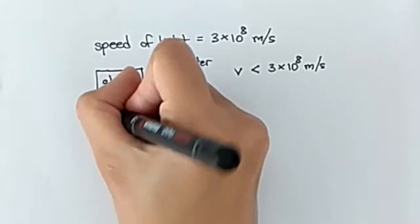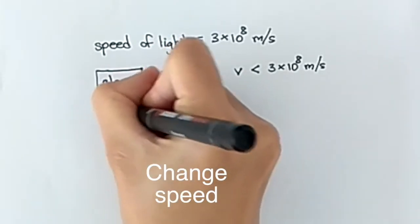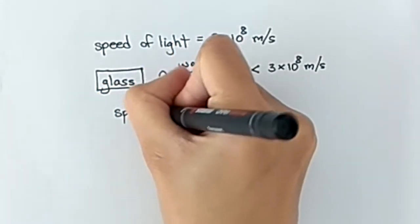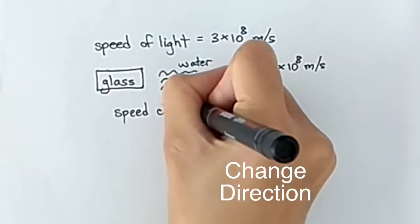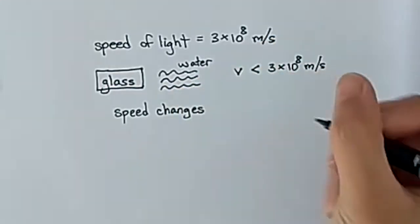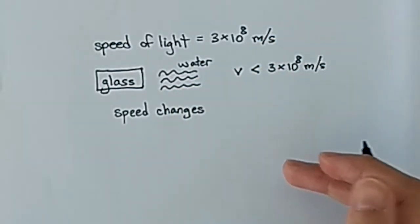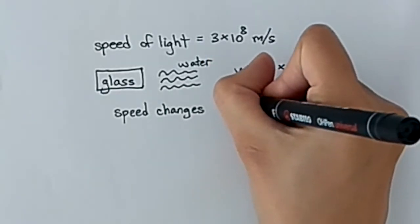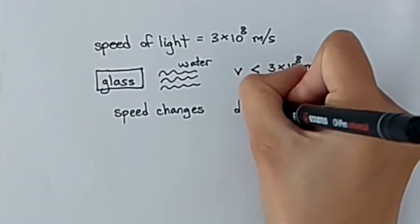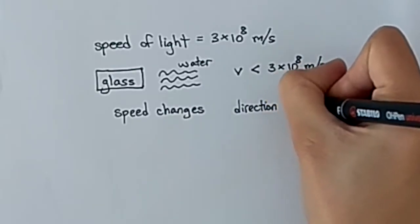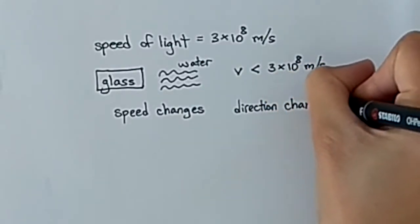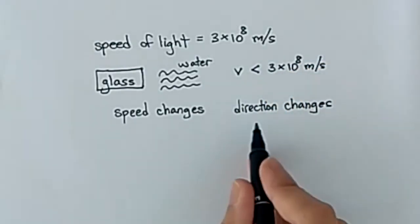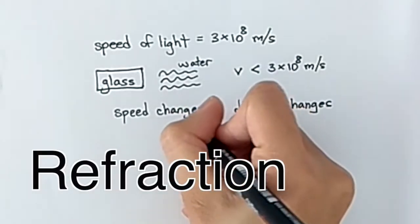When light goes through a material, it's going to change speed. And in certain cases, it's going to change its direction as well. If both speed and direction change in a wave, we say that it's undergone refraction.